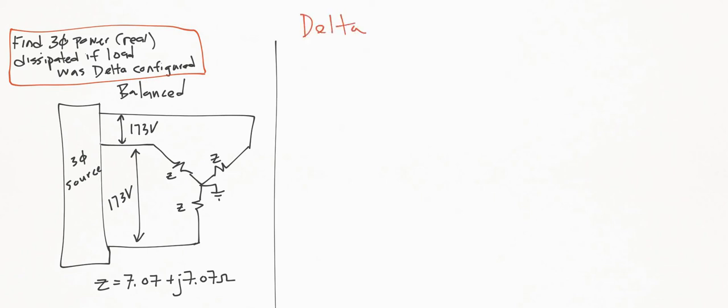For all Delta circuits, the line-to-line voltage is equal to what I'm going to call the phase voltage. In this case, it's equal to 173 volts.